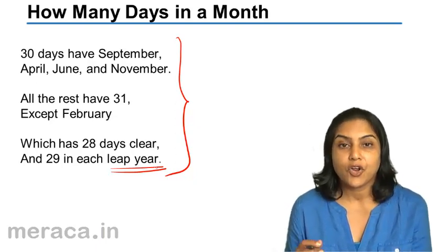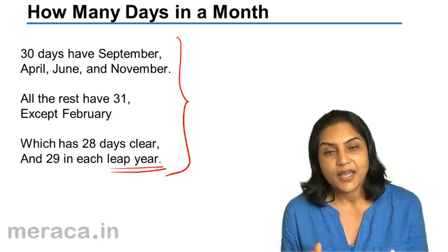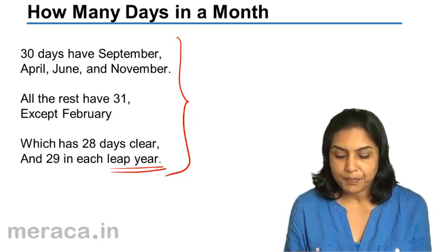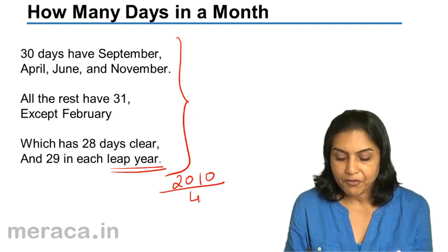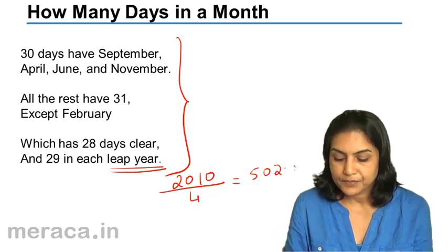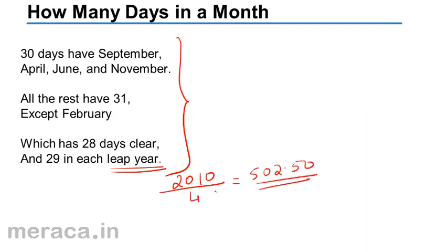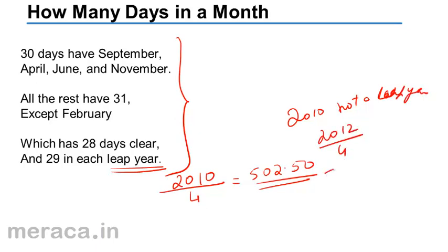If not, it is a non-leap year having 28 days in February. To take an example, if we take 2010 — 2010 divided by 4, it is not exactly divisible. If we take 2012 divided by 4, it is divisible and therefore 2012 is a leap year.